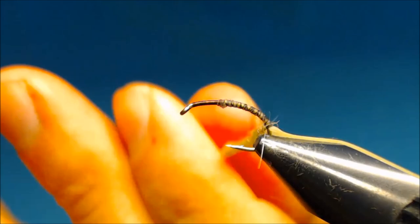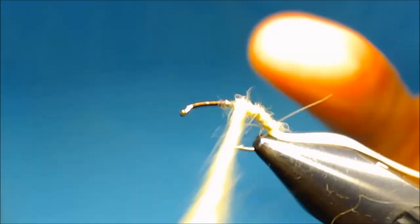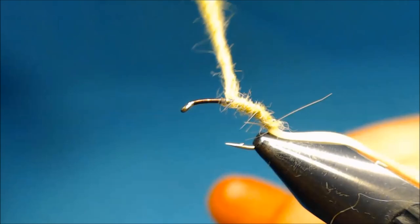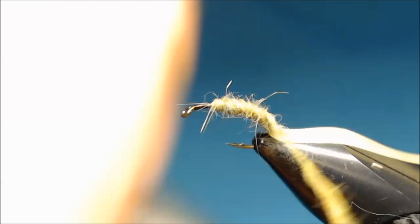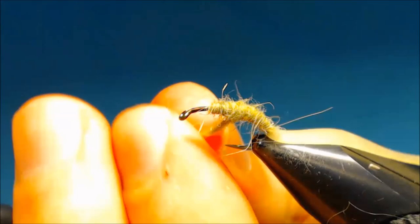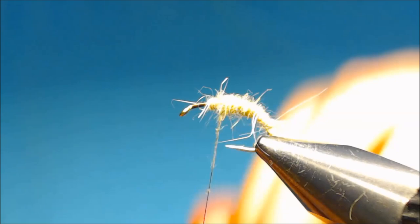And then we want to build up the shape of the Caddis. The Caddis Pupa are quite thick. So I'll just go up with the thread to the point of the hook. And then I go back again, building up the shape that I want. And I'll just add a few strands of dubbing.